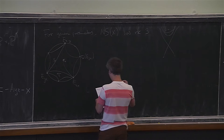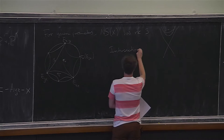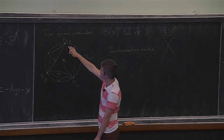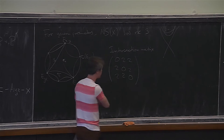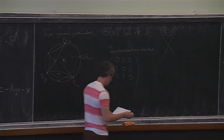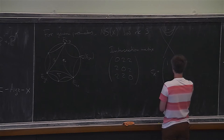The Néron-Severi group has rank 3, and each curve has self-intersection 0 but curves intersect each other, giving a quadratic form of signature (1,2). The way sigma_x acts: it does not change the first two curves containing x, namely E_{xy} and E_{zx}, but it acts on E_{yz} via a matrix transformation. You can check that this is an involution — if you multiply this matrix with itself you get the identity.